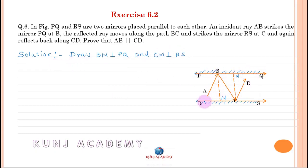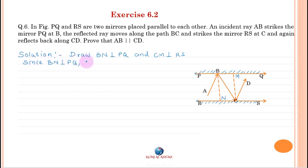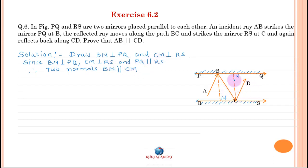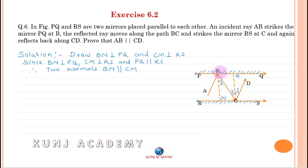Since PQ is parallel to RS, BN is perpendicular to PQ, and CM is perpendicular to RS, therefore these two normals BN and CM are parallel to each other. Let angle DCM equal 1, angle BCM equal 2, angle CBN equal 3, and angle ABN equal 4.